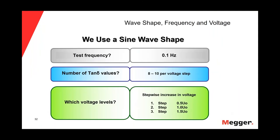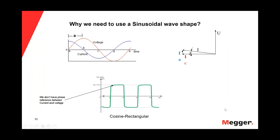To perform the tan delta test, we need to use a sinusoidal wave shape at the frequency of 0.1 Hz. We will measure the tan delta 8 to 10 times per voltage step. The three voltage steps applied are: first 0.5 U0, second 1.0 U0, and third 1.5 U0. Why do we need to use a sine wave shape? Because we use the phase diagram to see the correlation between voltage and current, and we need the phase reference between the peaks of the voltage and the peaks of the current — a reference that we cannot have with a cosine rectangular wave shape.